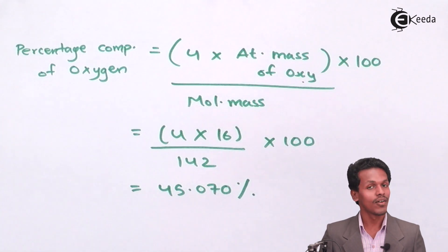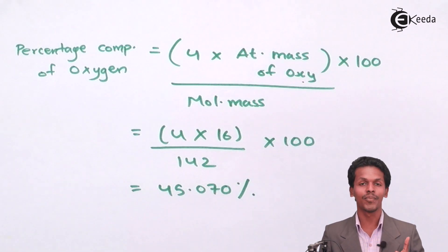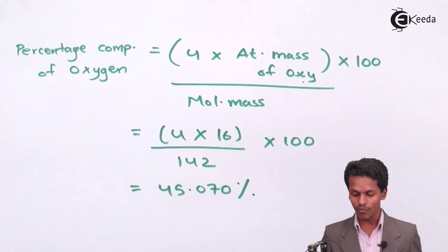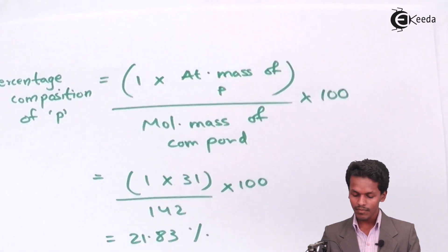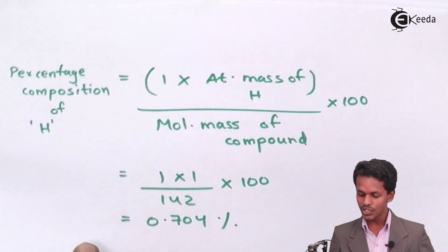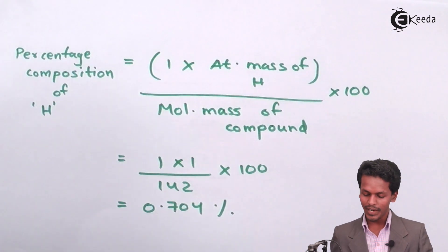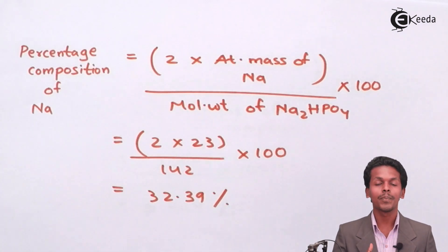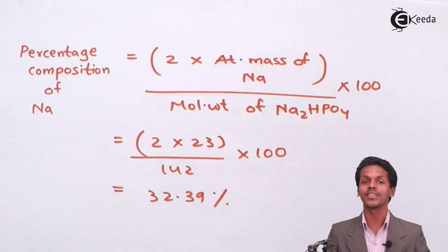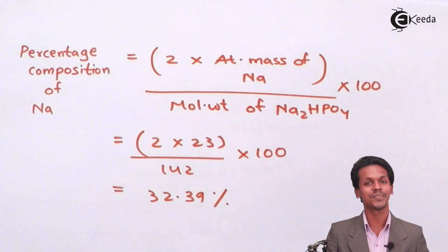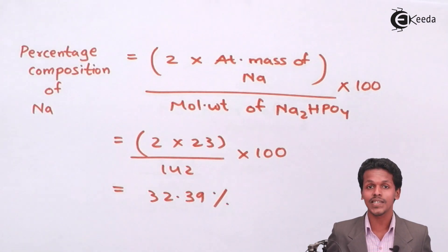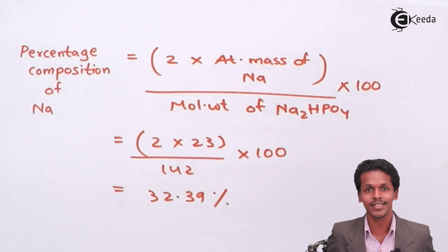This percentage of oxygen is present in one molecule of sodium hydrogen phosphate. Summing all percentages: oxygen = 45.07%, phosphorus = 21.83%, hydrogen = 0.74%, and sodium = 32.39% — together they equal 100%. This was the numerical based on percentage composition and molecular formula. Thank you for watching; share this video and subscribe to the channel.